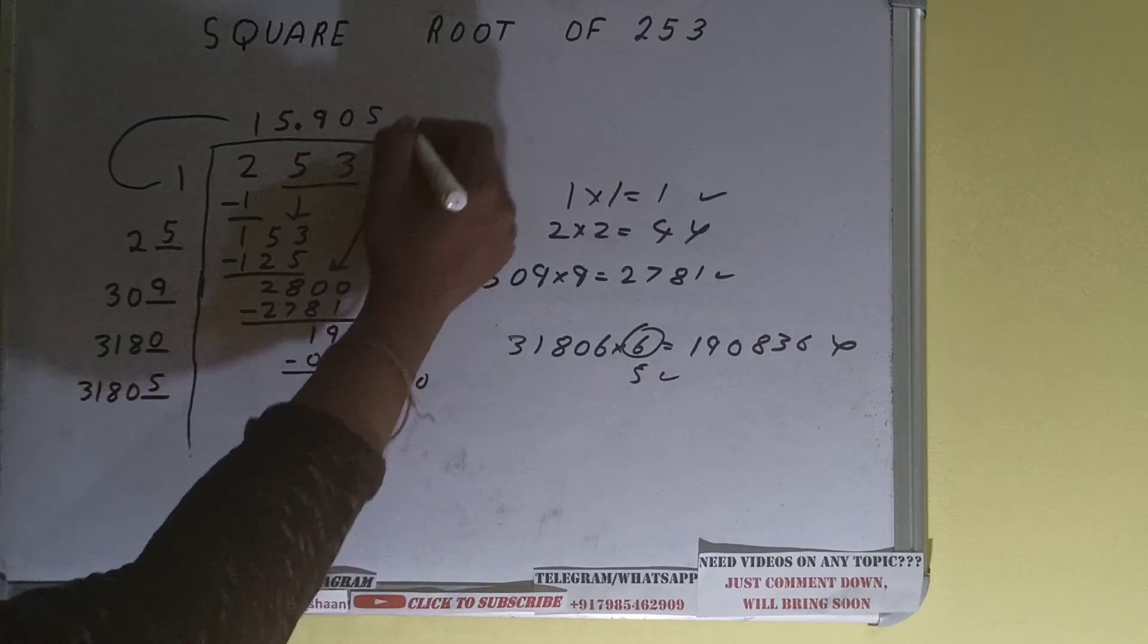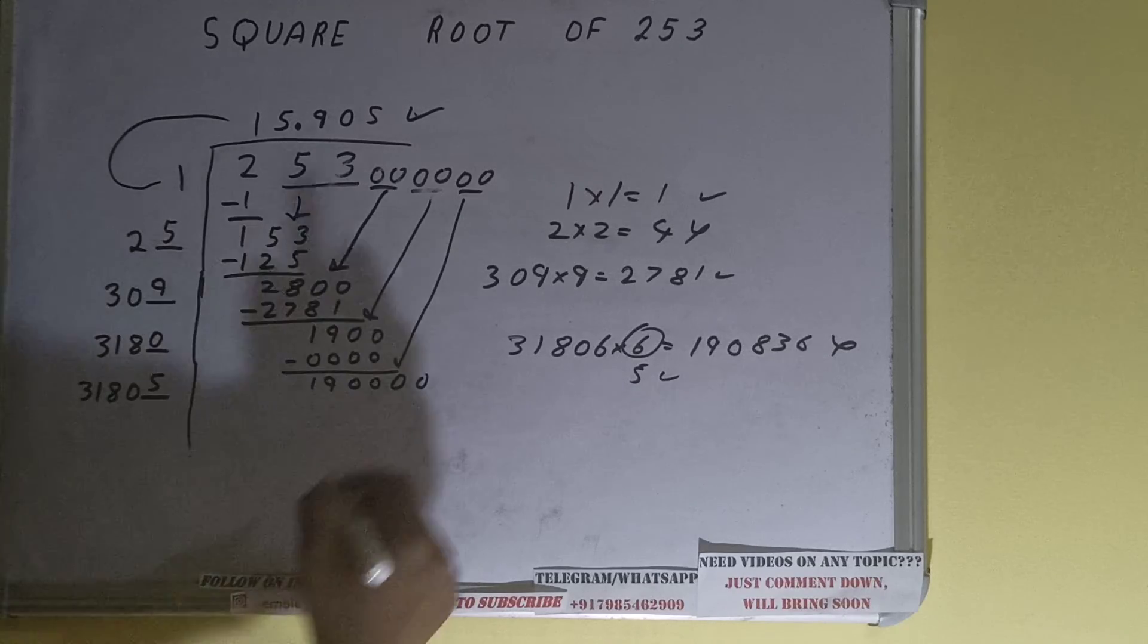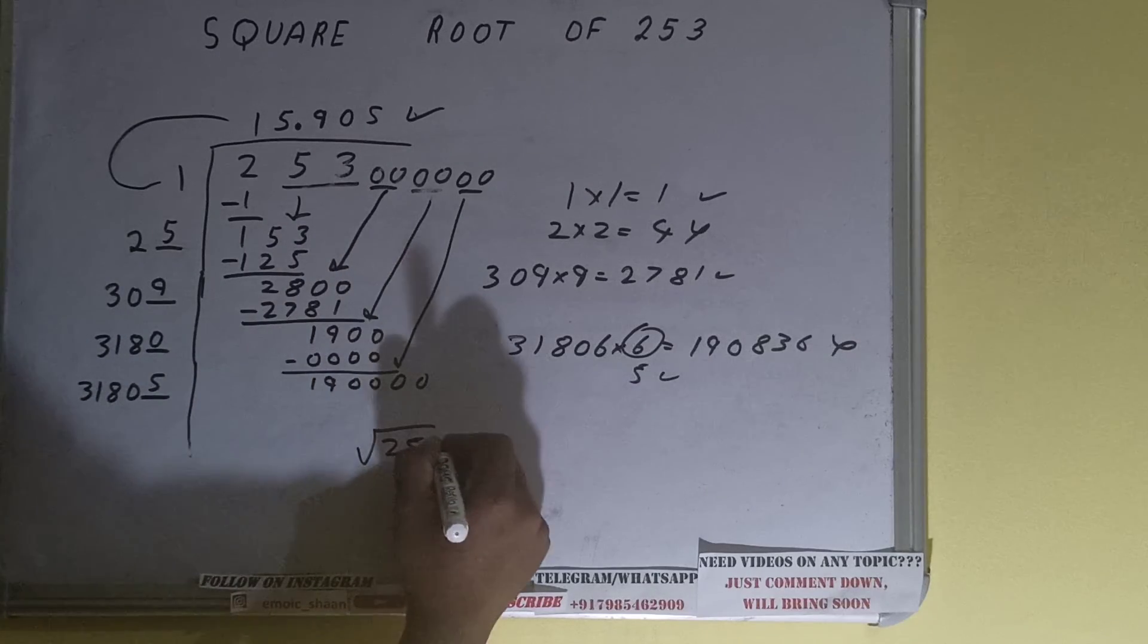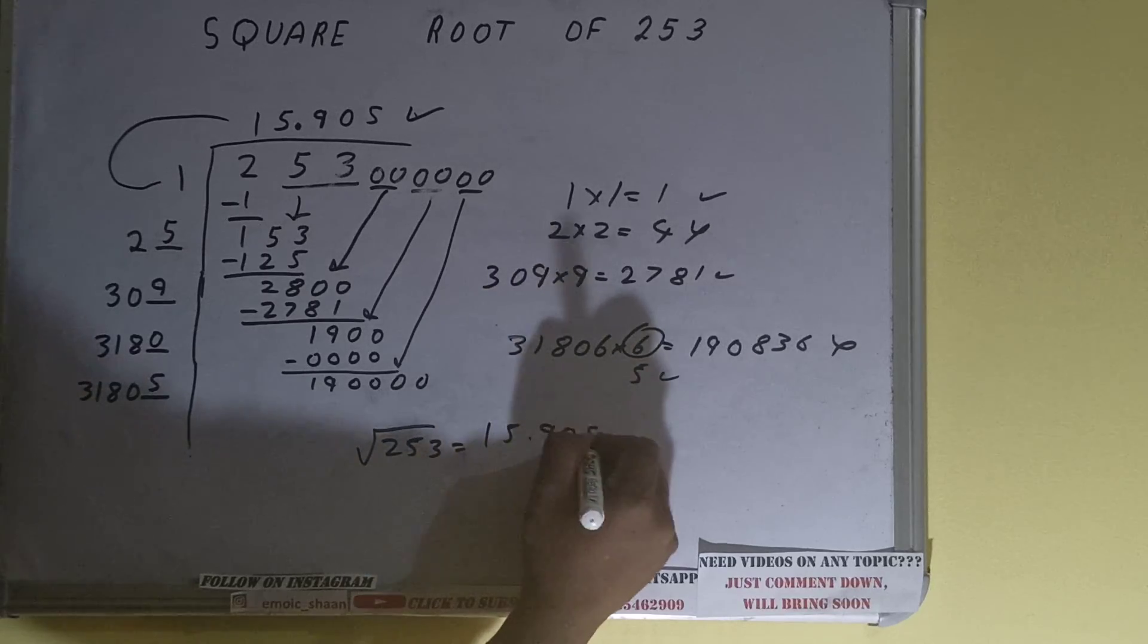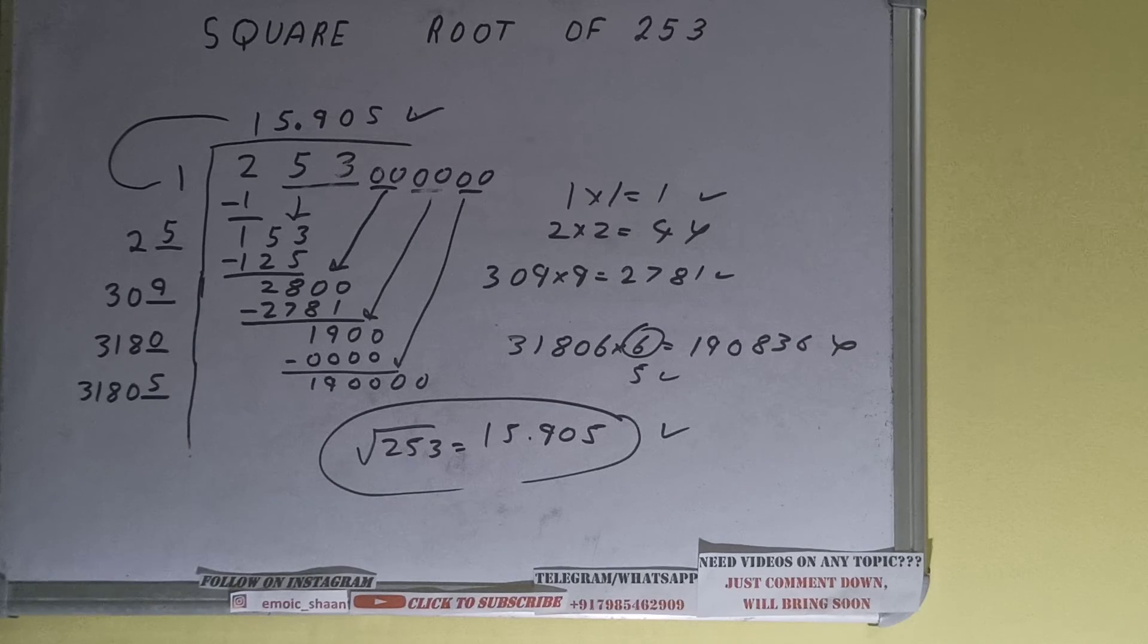We don't need to calculate because we already got our answer correct up to three decimal places. So square root of 253 will be 15.905, and that will be the answer. This is all. If you found the video helpful please do the like button, do consider subscribing, and thanks for watching.